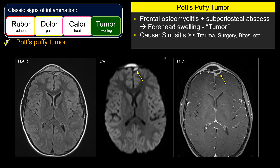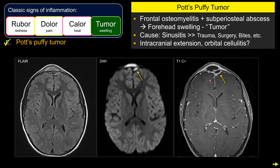The most common cause by far is acute sinusitis, which causes osteomyelitis of the adjacent frontal bone, and that in turn causes soft tissue swelling or subperiosteal abscess formation. Any other type of infection in this region — such as from penetrating injury, trauma, surgery, or even bug bites — can also produce Pott's puffy tumor. The most important thing about Pott's puffy tumor, the reason it can be so dangerous, is the potential for intracranial extension.